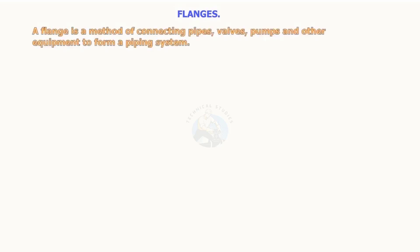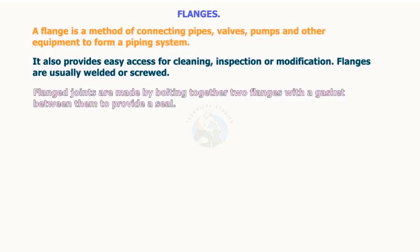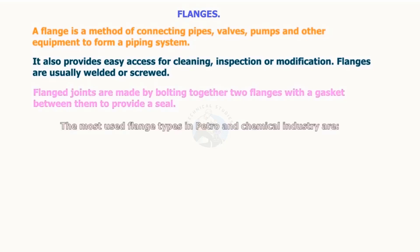A flange is a method of connecting pipes, valves, pumps, and other equipment to form a piping system. It also provides easy access for cleaning, inspection, or modification. Flanges are usually welded or screwed. Flange joints are made by bolting together two flanges with a gasket between them to provide a seal. The most used flange types in the petro and chemical industry are in the following list.